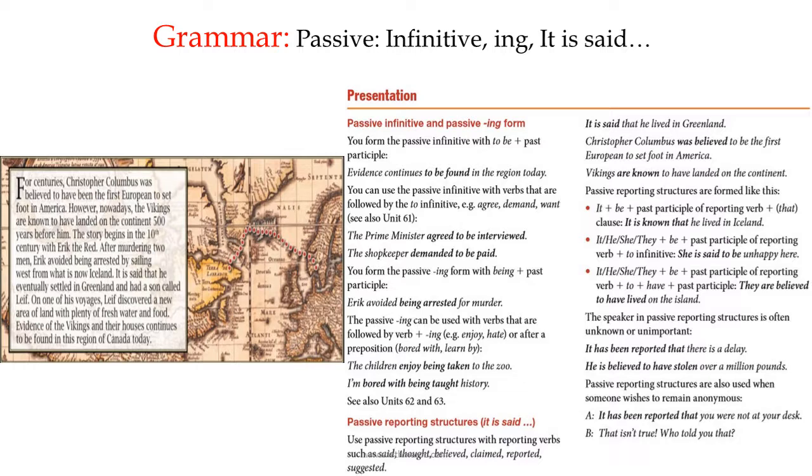Passive infinitive and passive ing form. You form the passive infinitive with to be plus past participle. For example: evidence continues to be found. That's to be, the infinitive, plus found, which is the past participle of the verb find. You can use the passive infinitive with verbs that are followed by the to infinitive, such as agree, demand, and want.